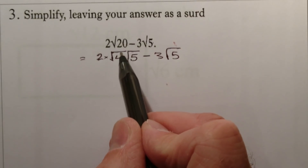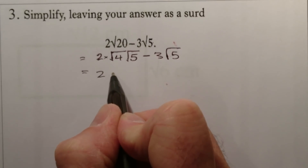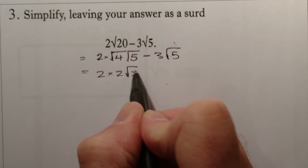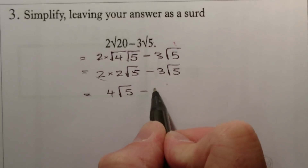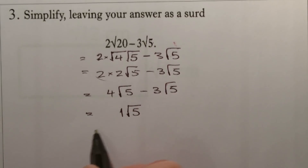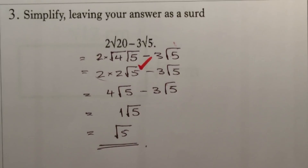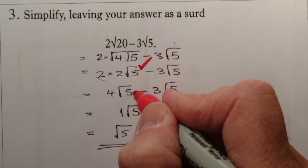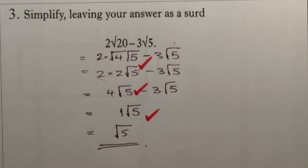So root 20 simplifies to root 4 times root 5, which matches up with the root 5 clue. Taking the square root of 4 gives 2, so 2 times root 5 multiplied by the 2 outside gives 4 root 5. Then 4 root 5 minus 3 root 5 leaves 1 root 5, which we write simply as root 5. That's the final answer. Marking: 1 mark for 2 root 5, 1 mark for 4 root 5, 1 mark for gathering to root 5 — 3 marks total.